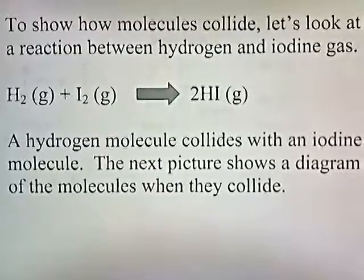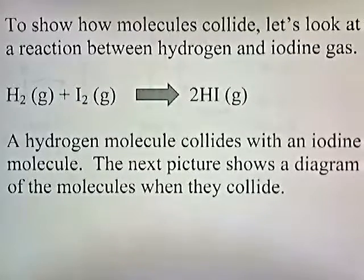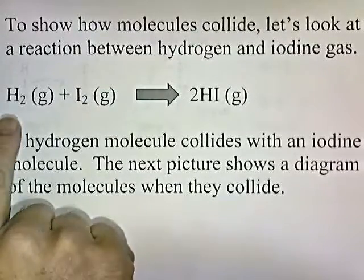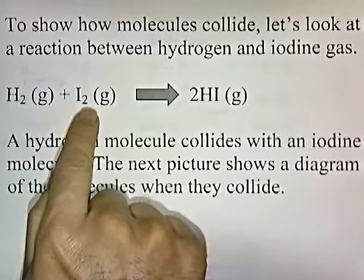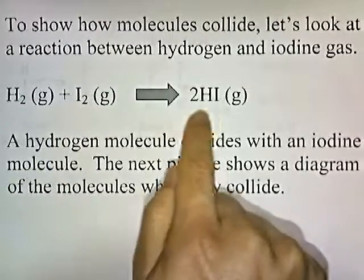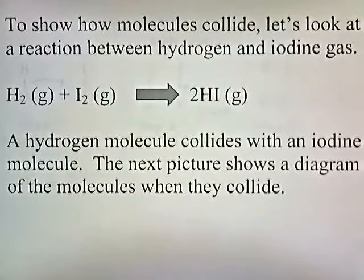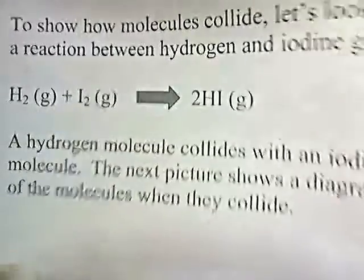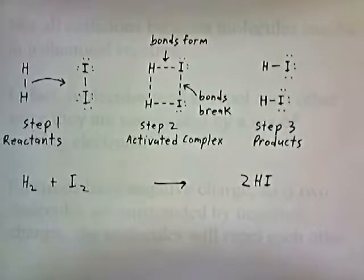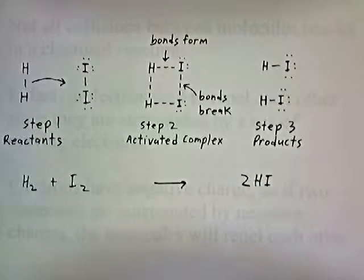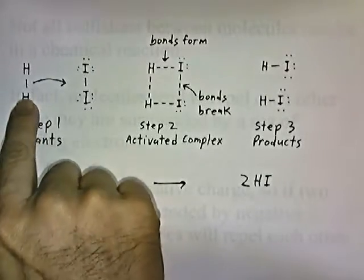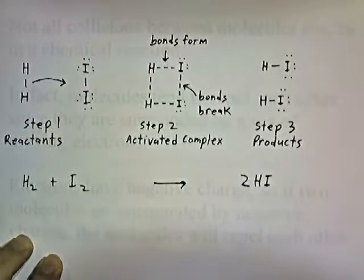To show how molecules collide, let's look at a reaction between hydrogen and iodine gas. Hydrogen gas is going to crash into iodine gas to form hydrogen iodide. In step one, the hydrogen molecule approaches the iodine molecule.